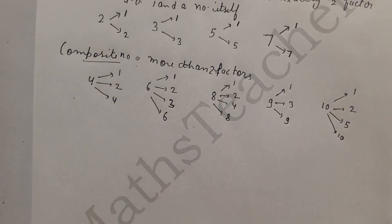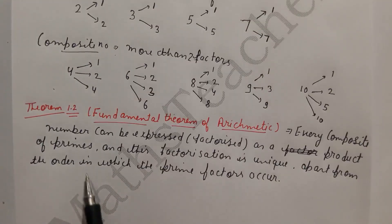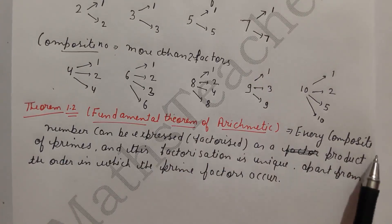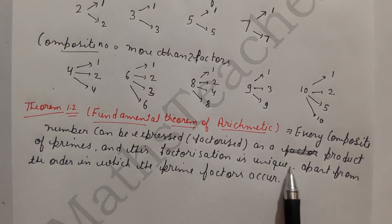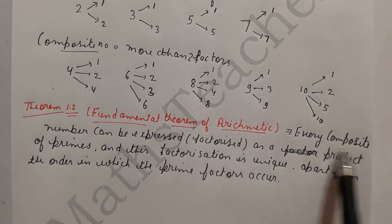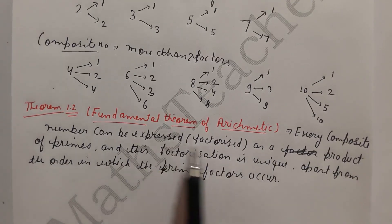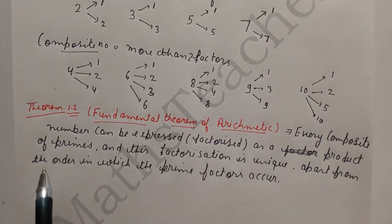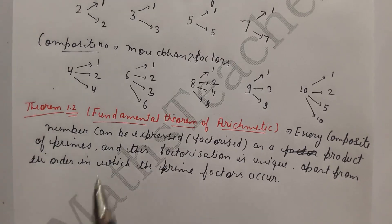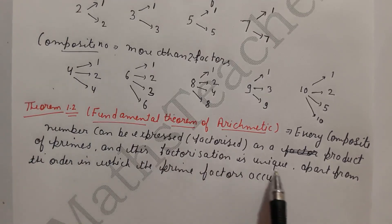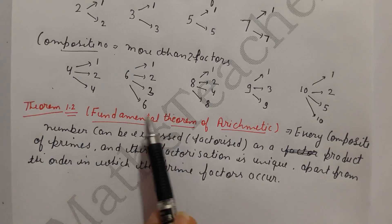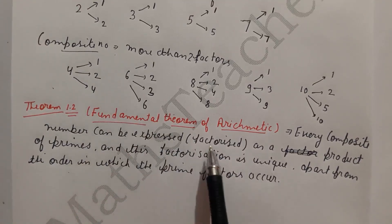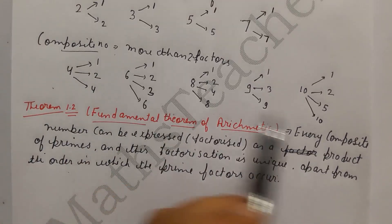Now we'll see the Fundamental Theorem of Arithmetic. The Fundamental Theorem of Arithmetic states: every composite number can be expressed or factorized as a product of primes, and this factorization is unique apart from the order in which the prime factors occur. In other words, every composite number, when factorized, gives a product of prime numbers, and while you can change the order, the factorization itself is unique.